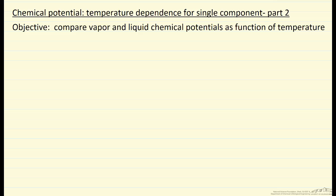In this screencast we are looking at how chemical potential changes with temperature for a single component, comparing vapor and liquid chemical potentials. The basis for this comparison is the equation relating Gibbs free energy to differential changes in temperature and pressure: dG = VdP - SdT. For a single component, the Gibbs free energy is equal to chemical potential.